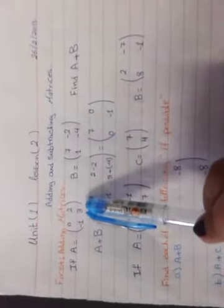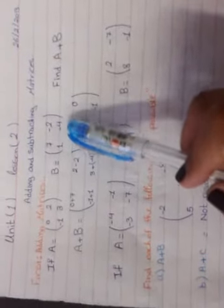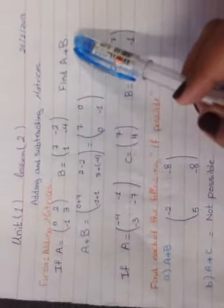If we have A: 0, 2, negative 1, 3, and B: 7, 1, negative 2, and negative 4, and we want to add A plus B.